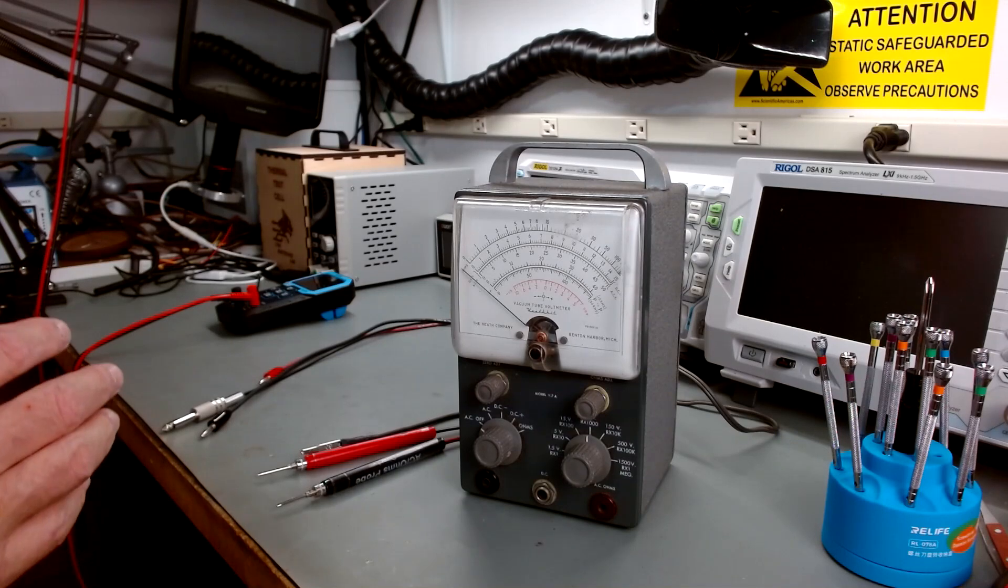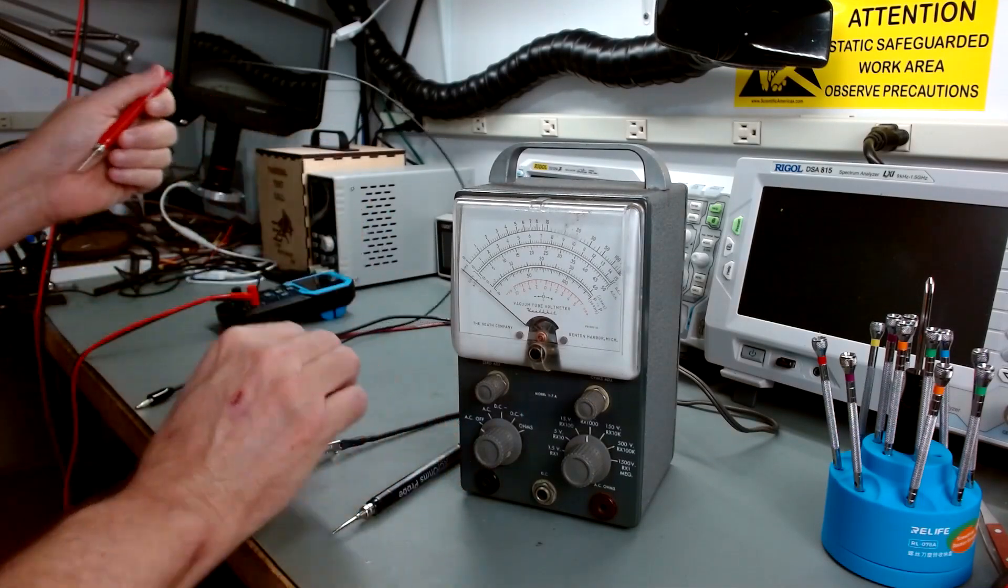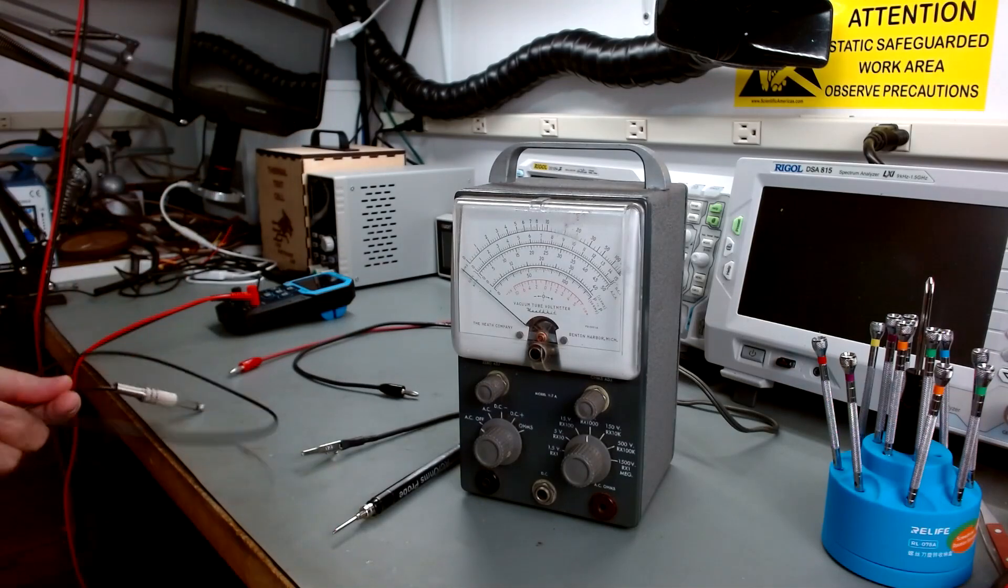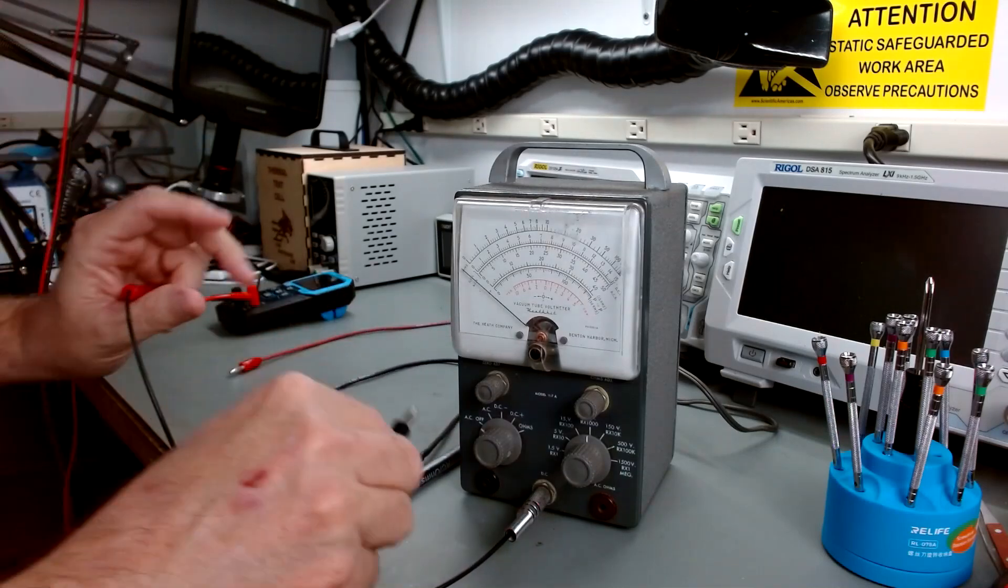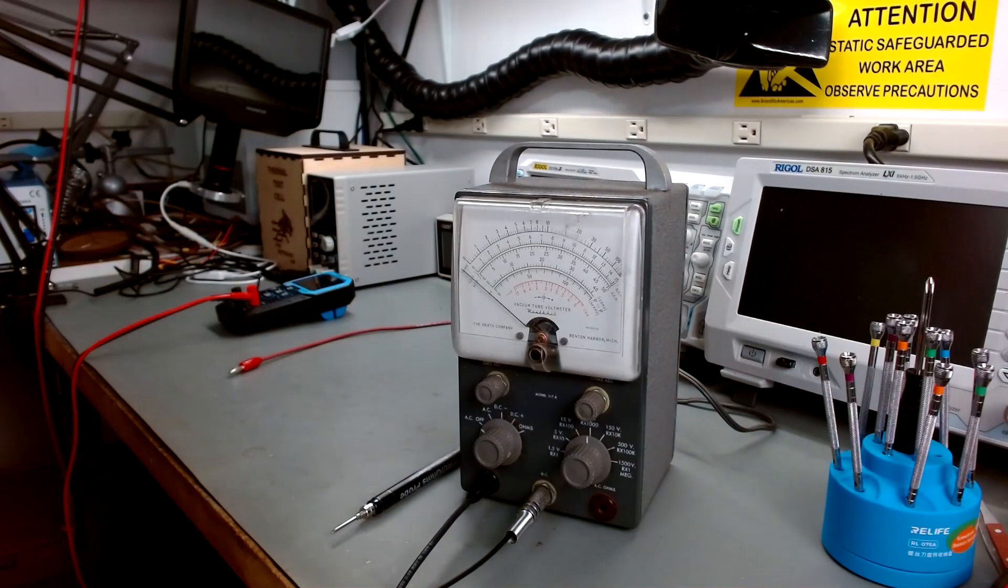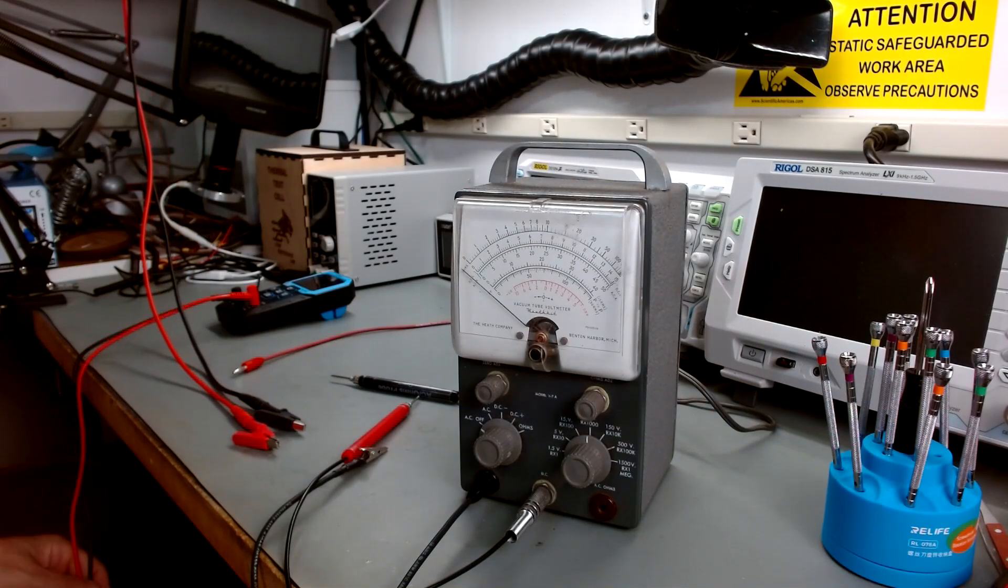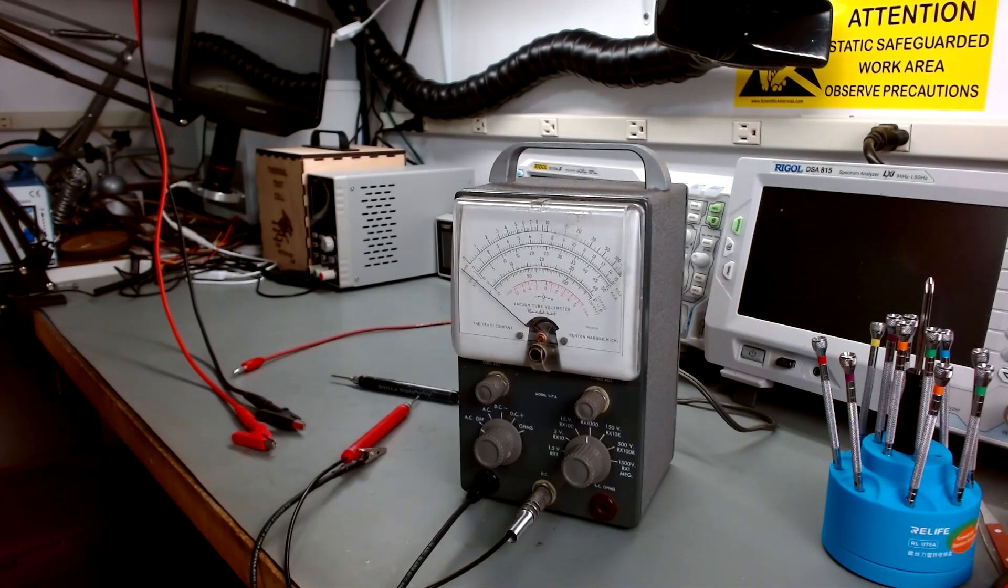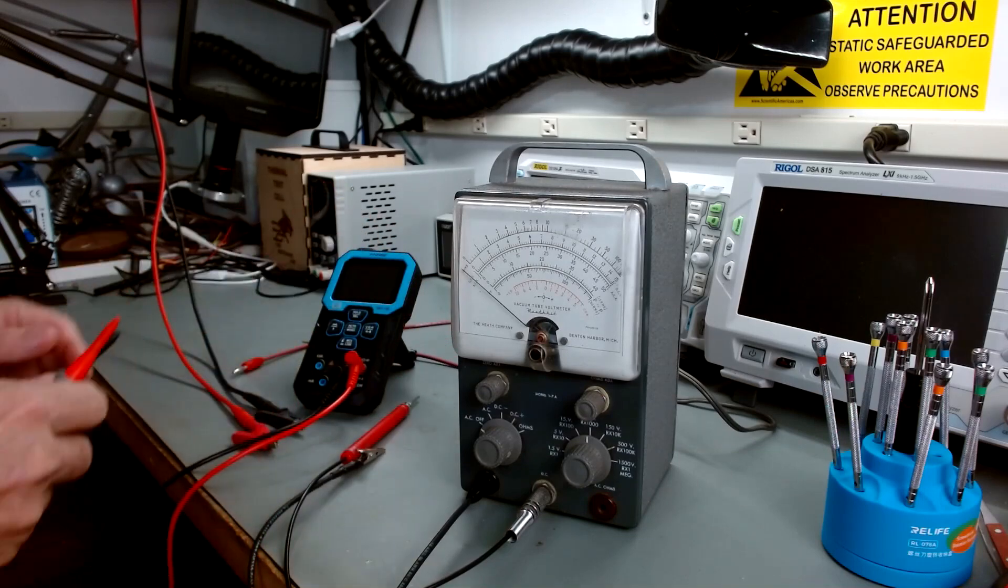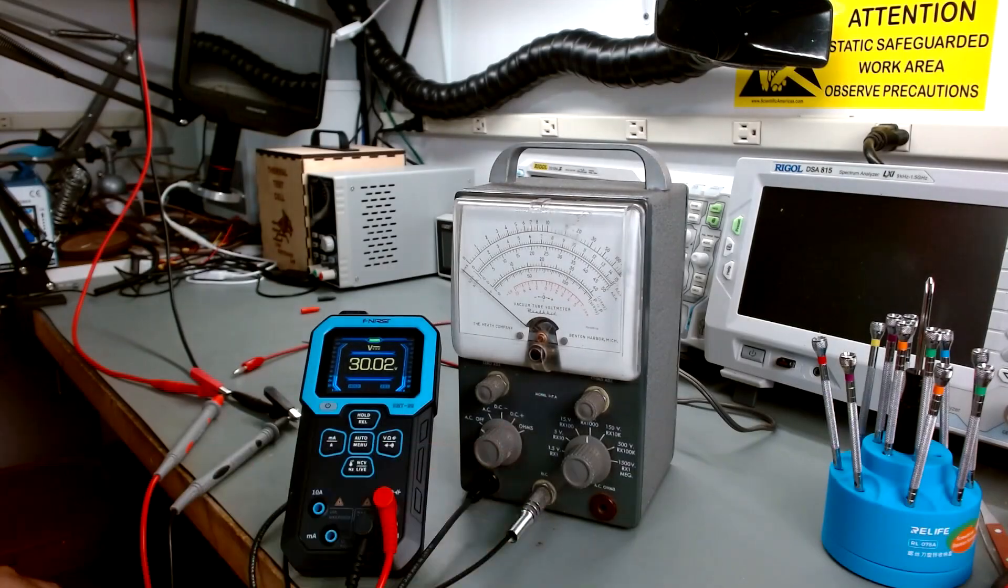I thought we would start out by hooking this thing up. I thought maybe we'd start with DC. So let me hook the DC probe. The DC is separate from the AC and ohms. And your common is an alligator clip. What I'm going to do is I've got some probes over here off my power supply and we'll verify this. I've got my power supply calibrated pretty close to 30 volts. So let me check that first and then we'll see how this meter reads compared. There you go, 3.02, not too bad.